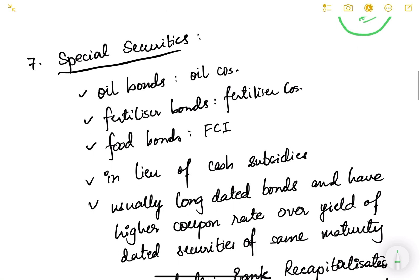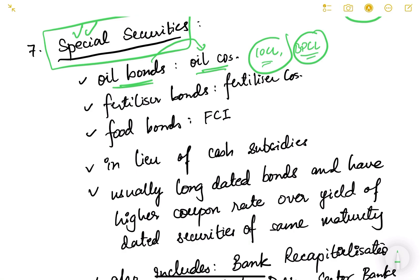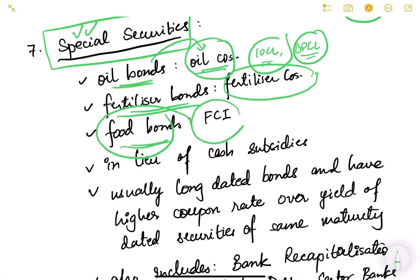Now let us look at the seventh type — special securities. Special securities are for some special purpose. Different types of special securities issued in India are oil bonds, issued by the Government of India to oil companies like IOCL, BPCL, and HPCL. Fertilizer bonds have been issued to fertilizer companies, and food bonds have been issued to the Food Corporation of India.